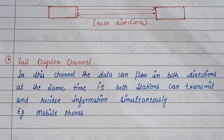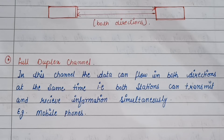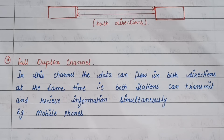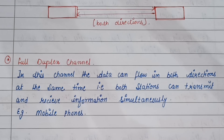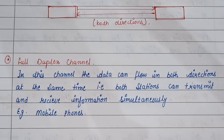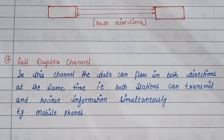Next hum dekhte hain full-duplex channel, jo ki last channel hai. In this channel, the data can flow in both directions at the same time. That is, both stations can transmit and receive information simultaneously. Is channel mein jo data hai, wo dono directions mein flow karta hai, aur yeh different hai baaki ke dono channels se. Dono stations data transmit bhi kar sakte hain aur receive bhi kar sakte hain simultaneously.